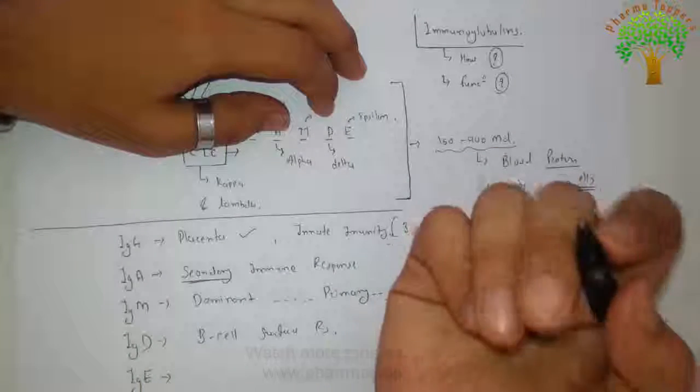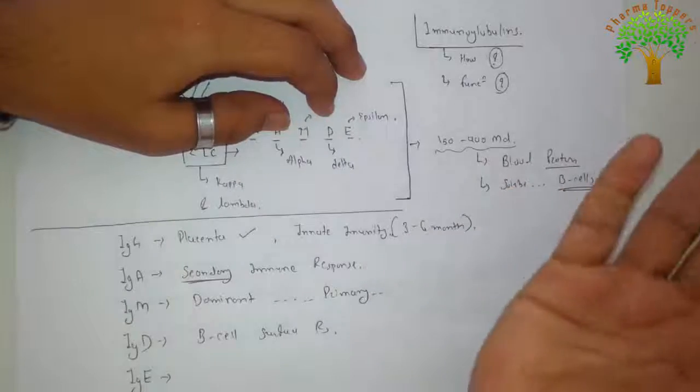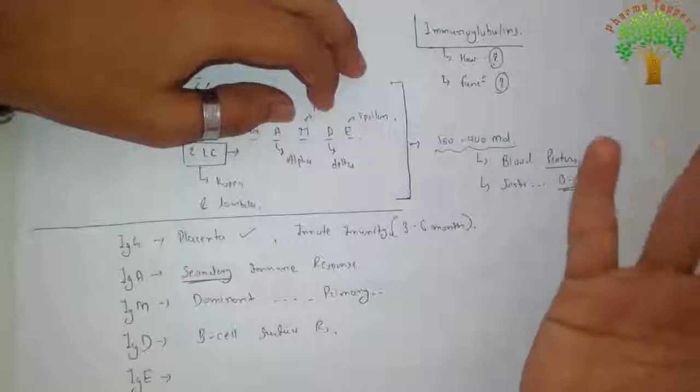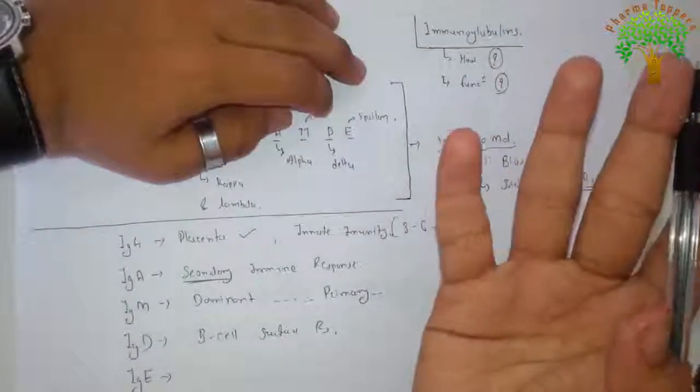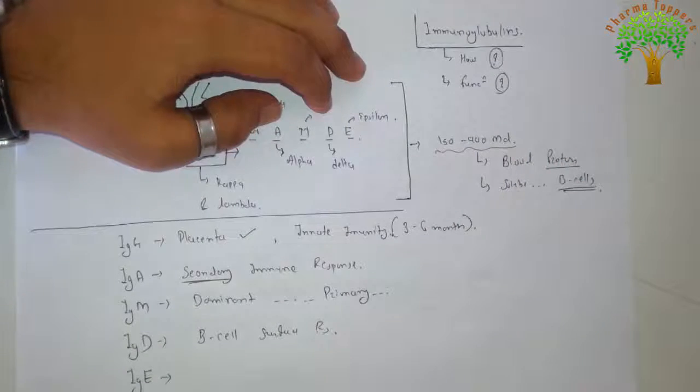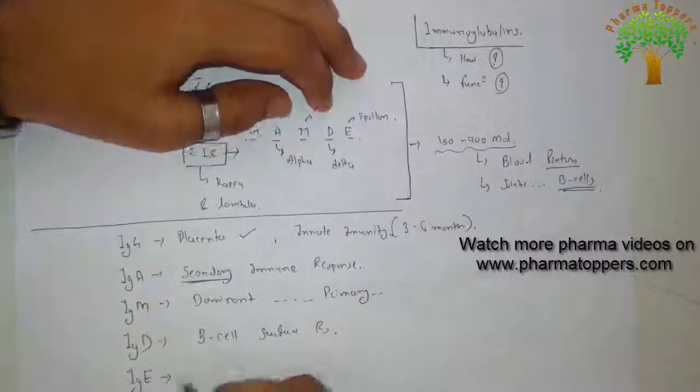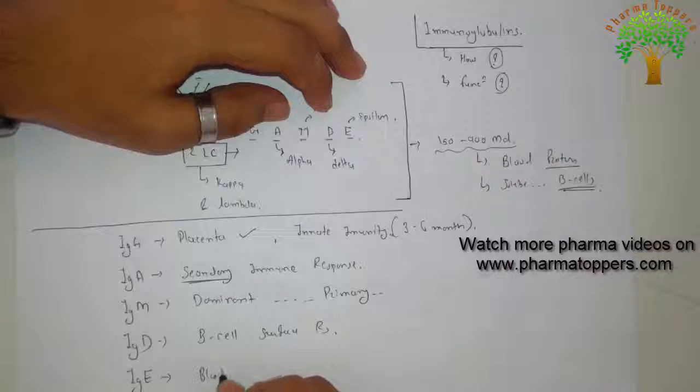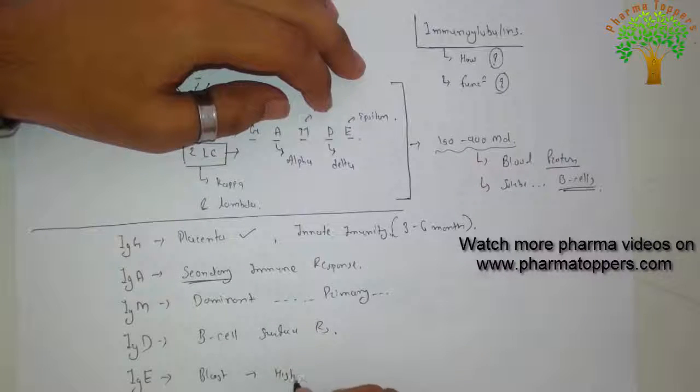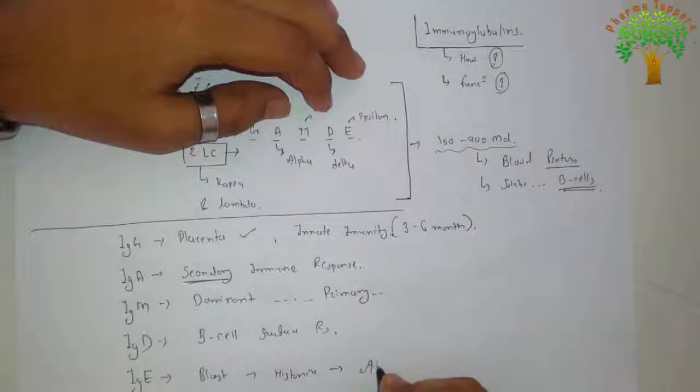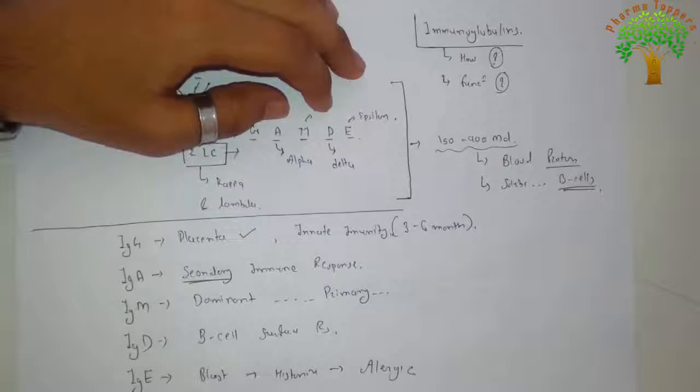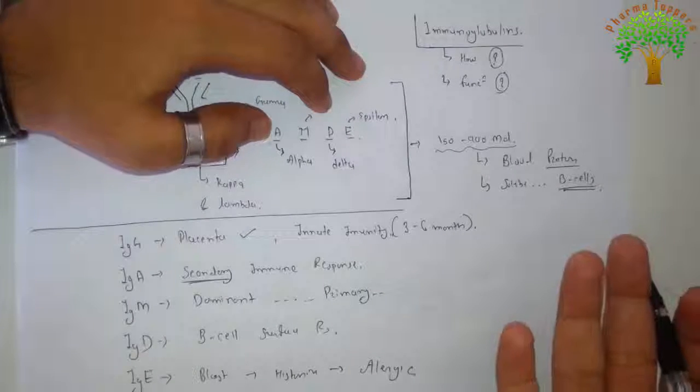About immunoglobulin E, it is a well-known one. All of you are pharmacy students, you know the mast cells and it is found there only. If you know mast cells, you know histamine, and you all know histamine is involved in allergic reactions. So immunoglobulin E is involved in allergic reactions.